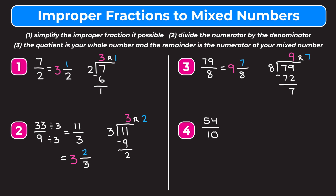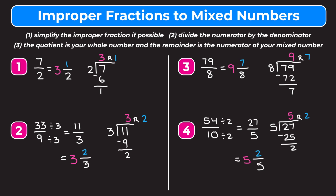Our last example is 54 over 10. We can simplify by dividing the top and bottom by two: 54 divided by two gives us 27 on top, and 10 divided by two gives us five on the bottom. Now we divide 27 by five. Five cannot go into two, so we check how many times five goes into 27, which is five times. Five times five is 25; subtract to get a remainder of two. So our mixed number has a whole number part of five, a numerator of two, and a denominator of five — giving us five and two fifths.